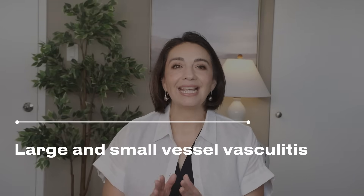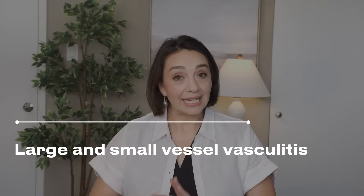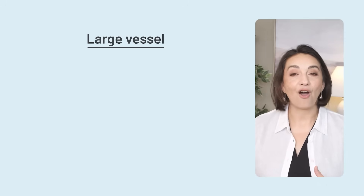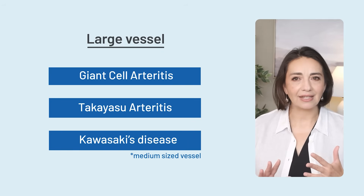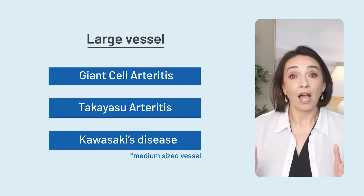Our autoimmune vasculitis conditions are divided by whether they attack large or small vessels. Now that we have a basic understanding of our blood vessels, let's get into the actual vasculitic conditions — and yes, get ready for some big names. We divide up the conditions into large vessel vasculitis and small vessel vasculitis. The large vessel vasculitides are giant cell arteritis, Takayasu's arteritis, and although it's considered a medium vessel vasculitis, I'll throw in Kawasaki's disease to simplify things.